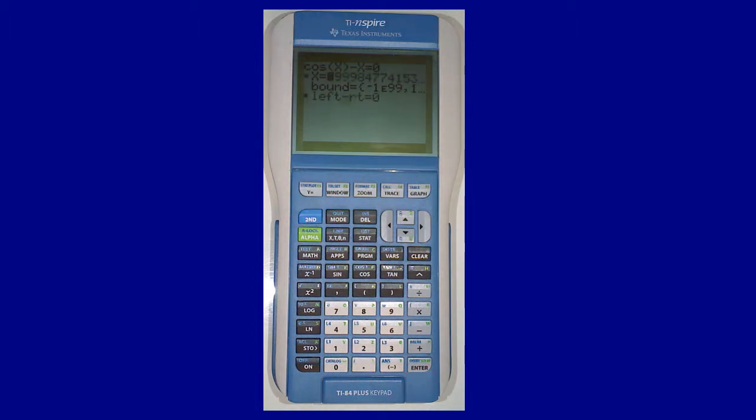Solver returns an answer of 0.9998. Try a few different guesses to see if the answer is affected by the guess. The answer is always 0.9998.